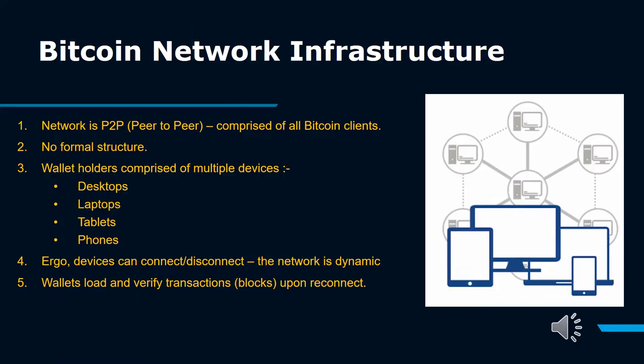Bitcoin is structured as a peer-to-peer network architecture on top of the internet. The term peer-to-peer means that the computers that participate in the network are peers to each other — they are all equal, there are no special nodes, and all nodes share the burden of providing network services.